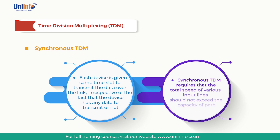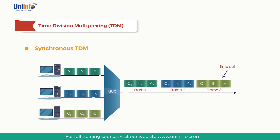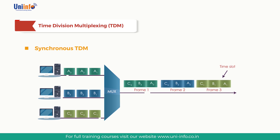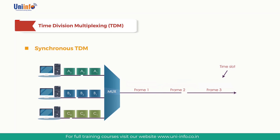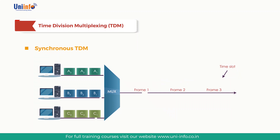Synchronous TDM requires that the total speed of various input lines should not exceed the capacity of the path. Each device places its data onto the link when its time slot arrives — each device is given its turn on the line in rotation. If any device does not have data to send, then its time slot remains empty. The various time slots are organized into frames, and each frame consists of one or more time slots dedicated to each sending device. If there are N sending devices, there will be N slots in a frame, one slot for each device.